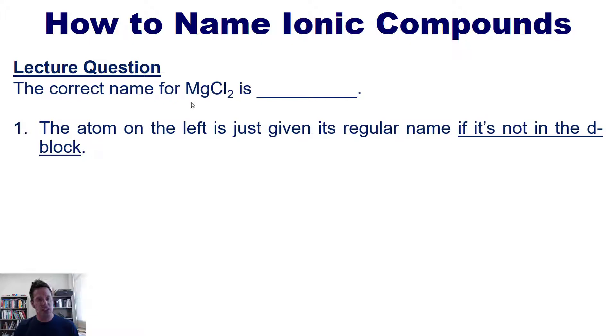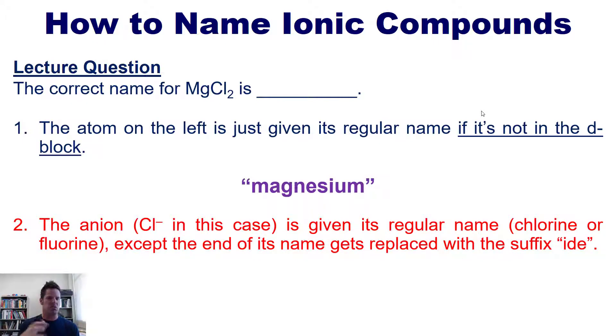The first one is the atom on the left is just given its regular name if it's not in the D block. Now magnesium is not in the D block. It's in column two of the periodic table. So we don't have to worry about anything else. We just write down its regular periodic table elemental name, which is magnesium. So that's the first half of our name. Now what do we do with the second half, these chlorines over here? Well, that is rule two. The anion, in this case it's a Cl minus, is given its regular name, which is chlorine, or if you had an F it would be fluorine, except the end of its name gets replaced with the suffix "-ide". So instead of calling it chlorine here, we call it chloride. So the systematic formulaic name for this compound would be magnesium chloride. Make sense?